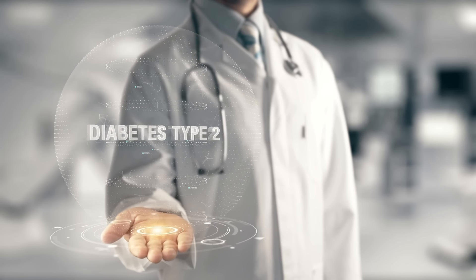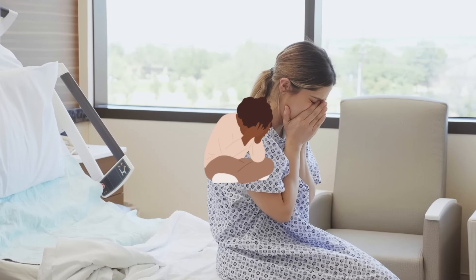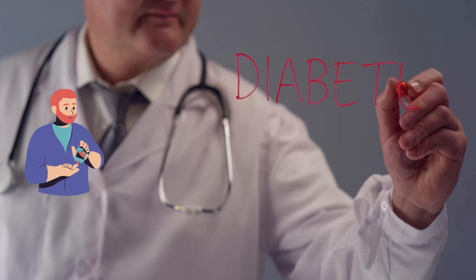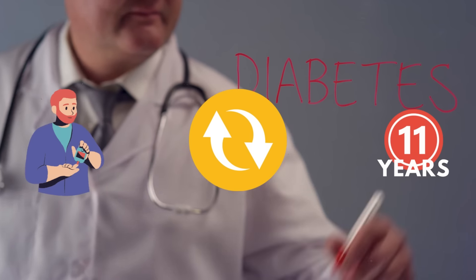Many people thought that if they had type 2 diabetes for more than 6 years, there was no turning back. But surprisingly, studies show that even if you've had type 2 diabetes for a whopping 11 years, you can reverse it. Amazing, right? So how can you tackle diabetes naturally?